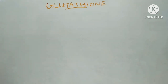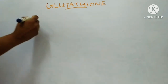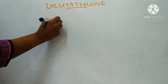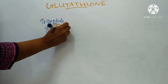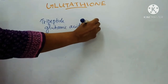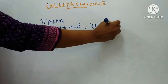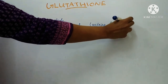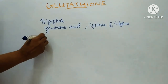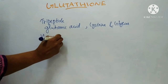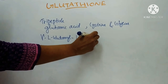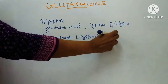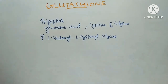Hello everyone. Today we will discuss about glutathione. This glutathione is a tripeptide of three amino acids — that is glutamic acid, cysteine, and glycine. Chemically it is gamma-L-glutamyl-L-cysteinyl-glycine.